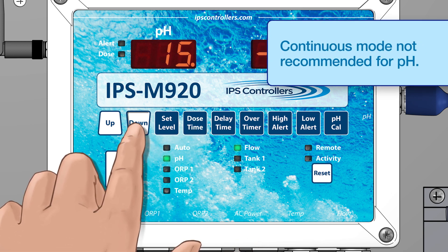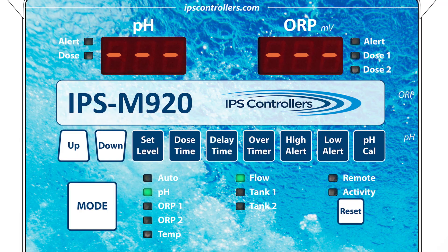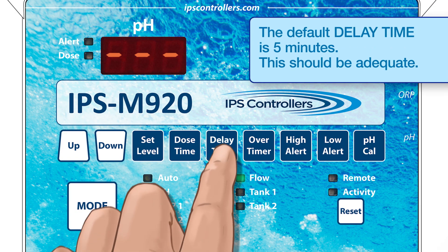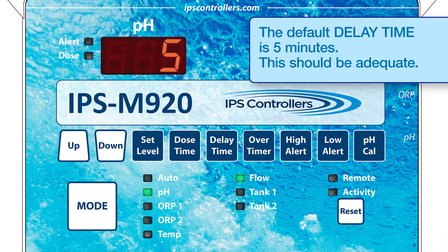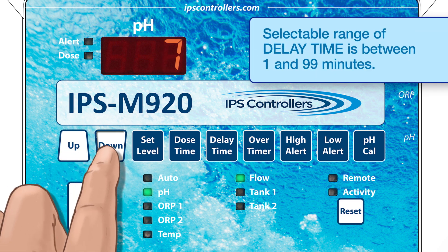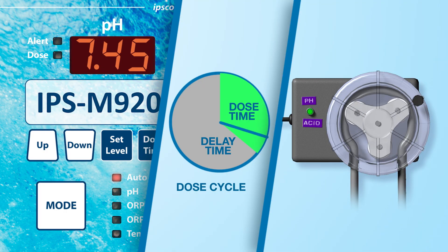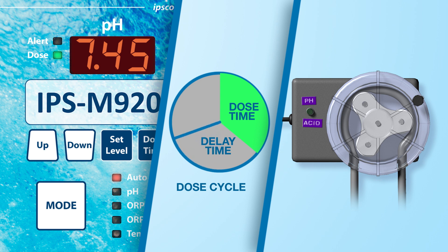It is possible to select a continuous dose time, but it is not recommended for pH. In the Delay Time function, if you have chosen a timed feed, the default is a delay time of 5 minutes between feed cycles. The selectable range of delay is between 1 and 99 minutes between feed cycles. After the dose time has been reached, the controller will de-energize the pH output for the selected number of minutes before checking the current level and dosing again if necessary.